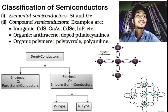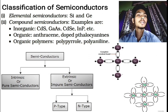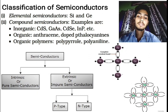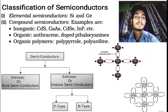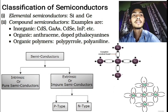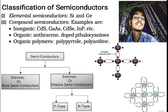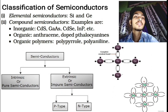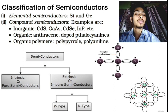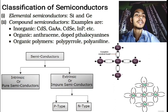The atomic number of silicon is 14, and the number of valence electrons for silicon is 4. Similarly, the atomic number of germanium is 32, and the number of valence electrons for germanium is also 4. Since both silicon and germanium have 4 valence electrons, they are called tetravalent.